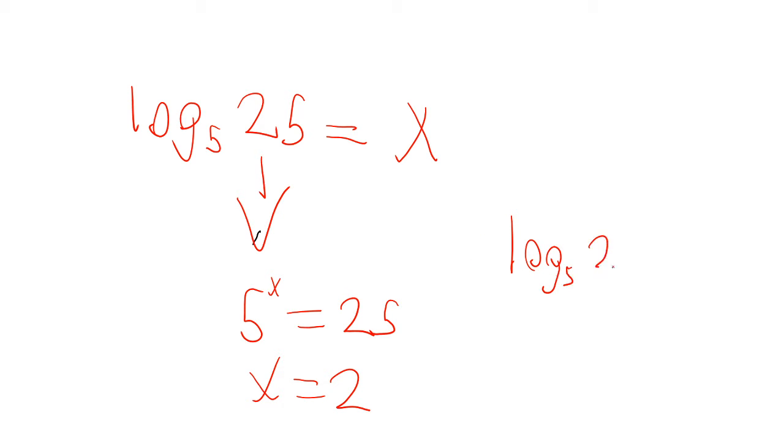So if someone tells you log base 5 of 25, here's what they're saying: What power do you have to raise 5 to to get 25? In other words, this can be written in exponential form as 5 to the x power equals 25. You obviously know 25 is a perfect square, 5 squared is 25, so x equals 2, meaning that log base 5 of 25 is equal to 2.